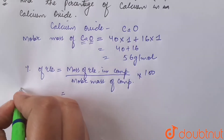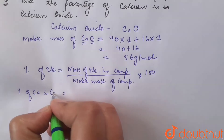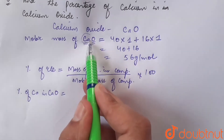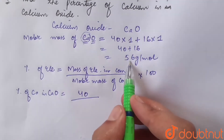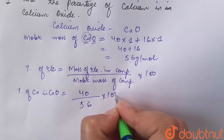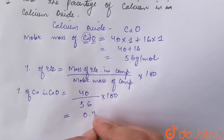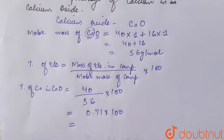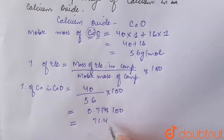Percentage of calcium in calcium oxide equals the mass of calcium in the compound, which is 40 grams, divided by the molar mass of the compound, which is 56 grams per mole, multiplied by 100. That equals 0.714 multiplied by 100, which equals 71.4.